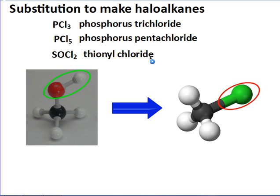Let's have a look at those structures. We've got methanol here, so its OH group is shown quite clearly — the red oxygen and white hydrogen. We can use PCl₃ to replace the OH group with the Cl group.